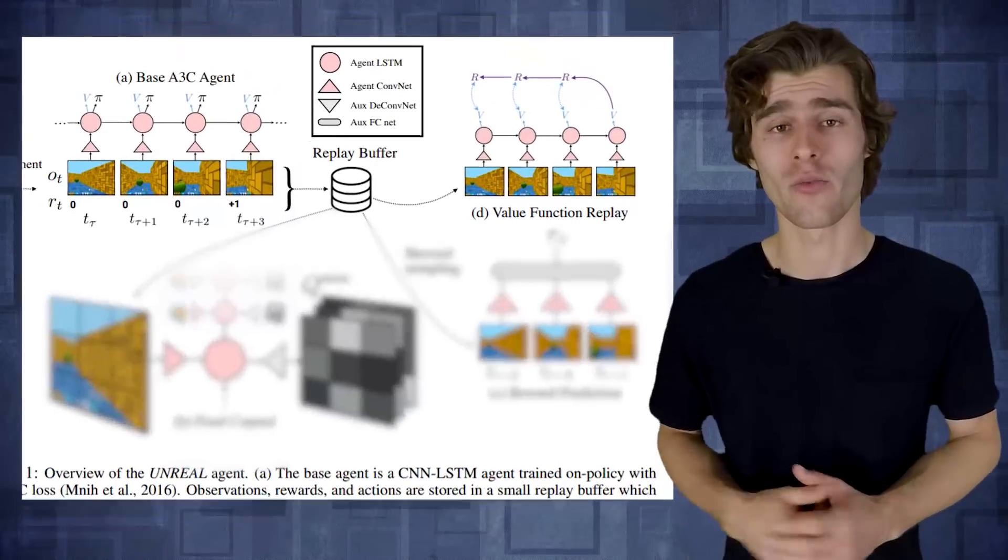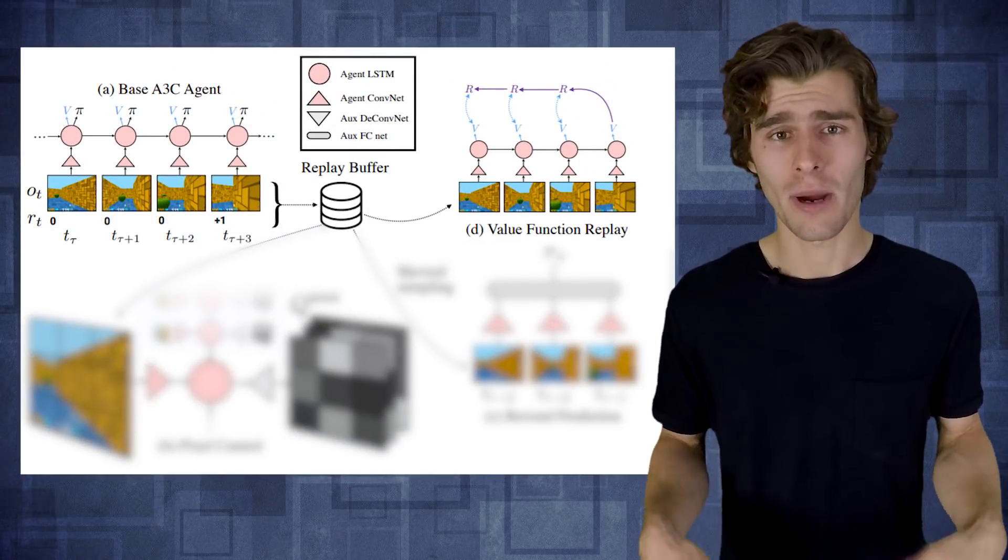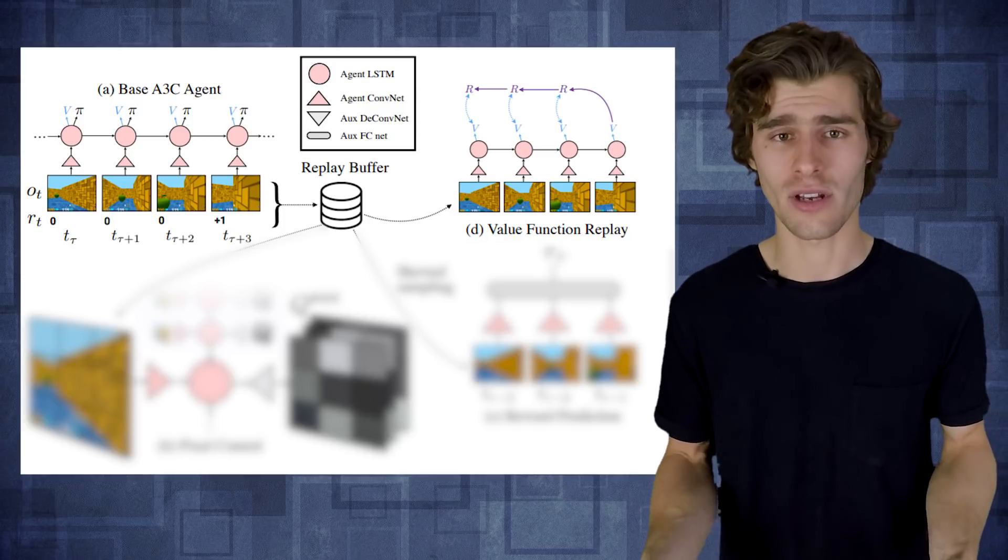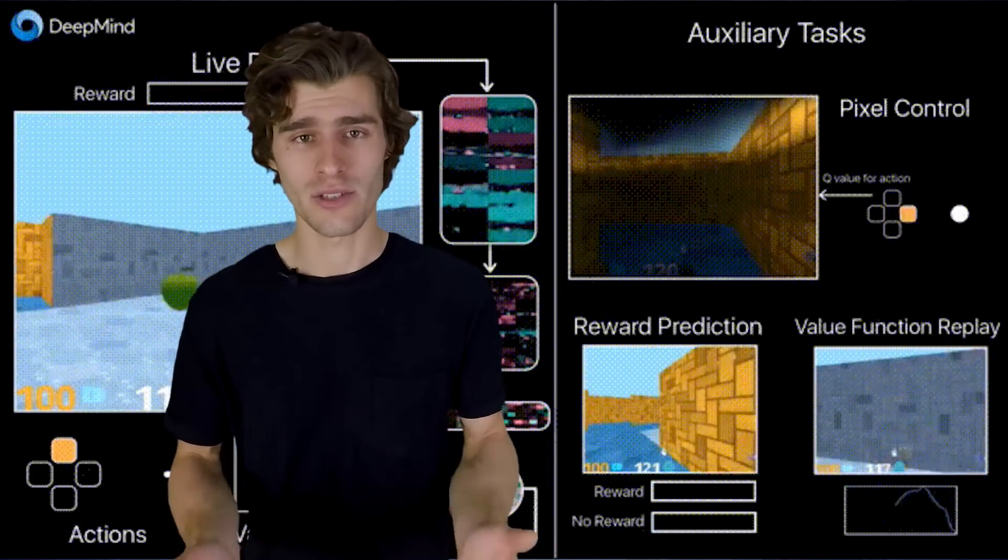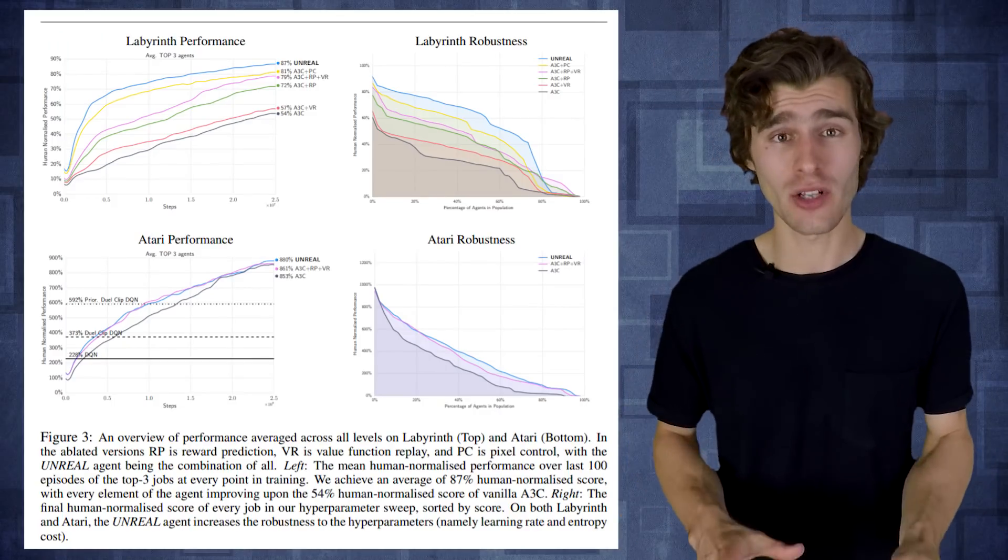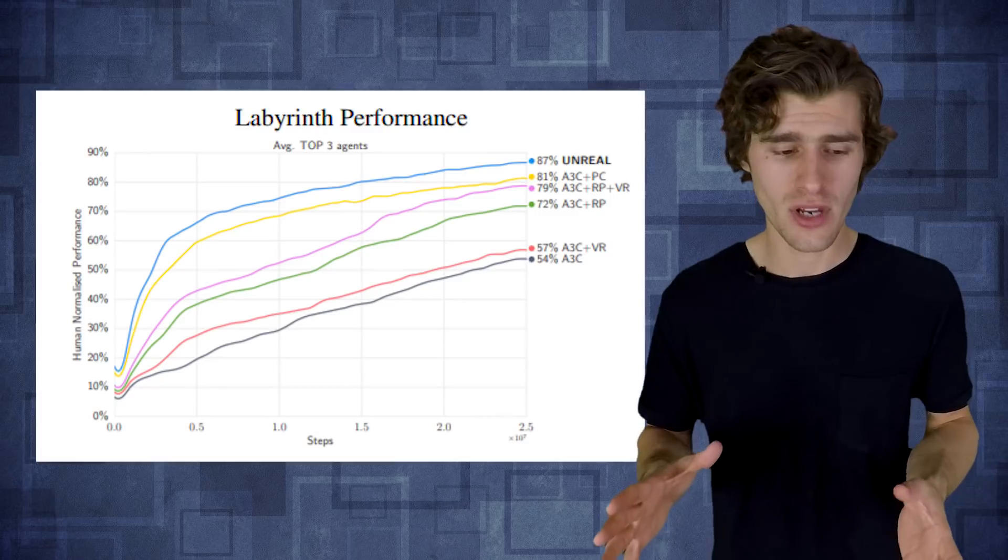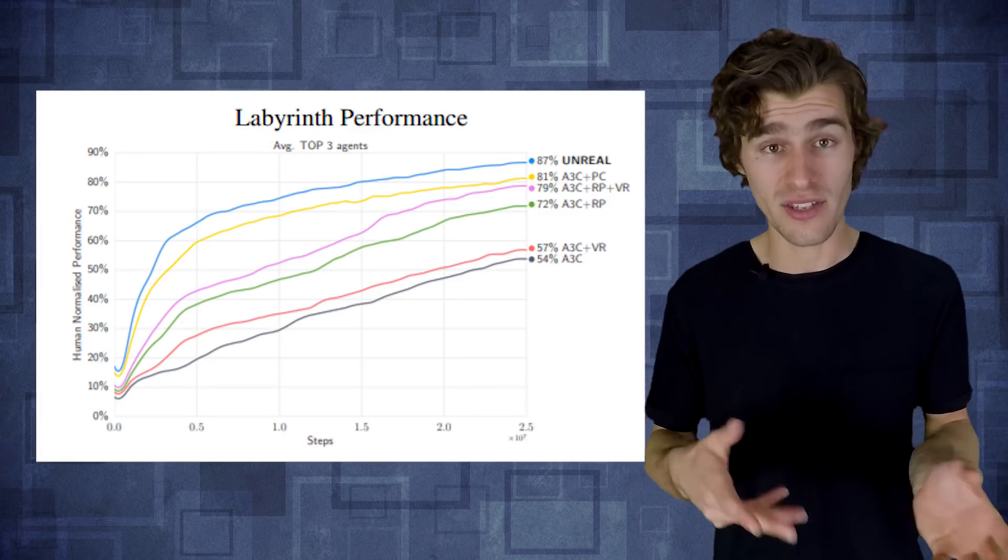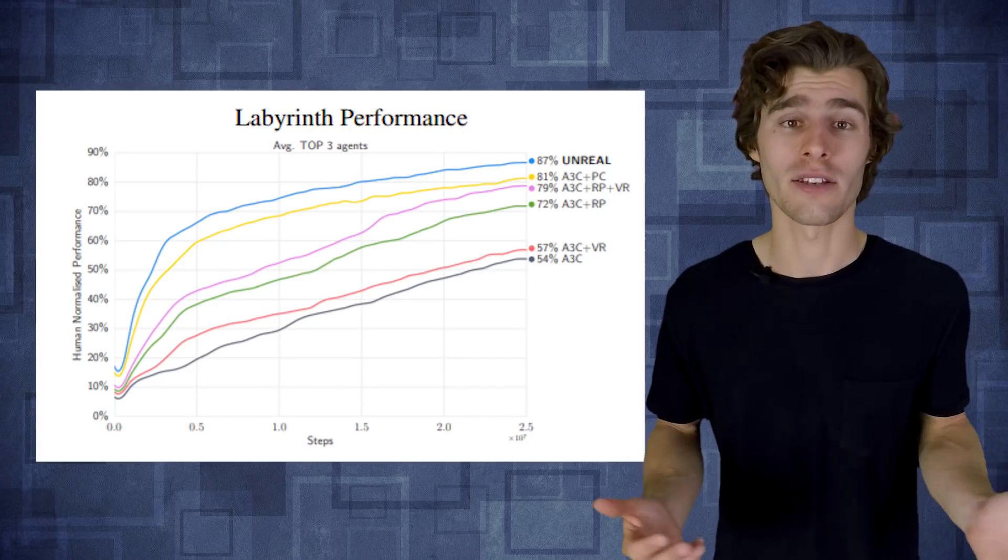And then there is one final task called value function replay which basically tries to estimate the value of being in a current state by predicting the total future reward that the agent is going to get from this point onwards. So this is basically what any off-policy algorithm like DQN for example is doing all the time. And so it turns out that by adding these relatively simple additional goals to our training pipeline we can significantly increase the sample efficiency of our learning agent. And especially the addition of the pixel control tasks seems to work really really well in three-dimensional environments where learning to control your gaze direction and how this influences your own visual input signals is very crucial for learning any kind of useful behavior.